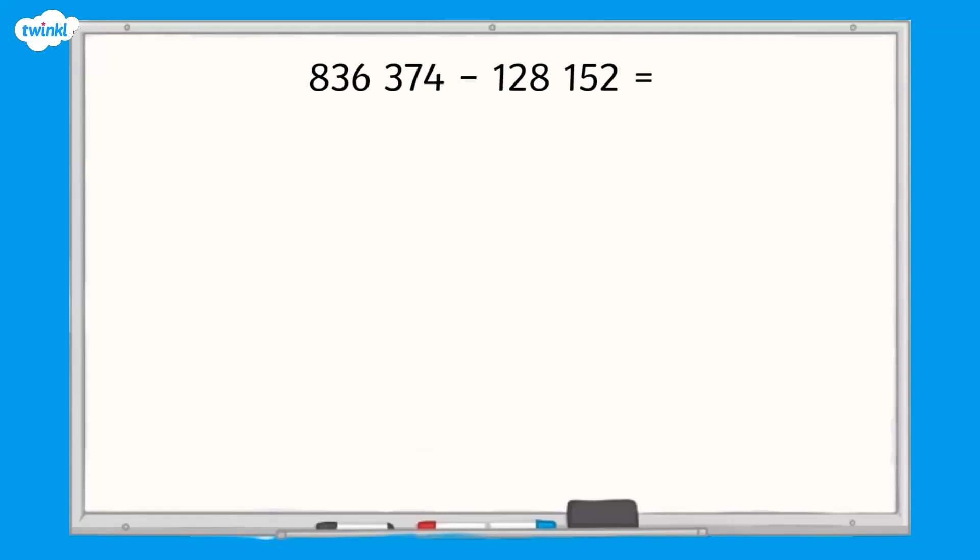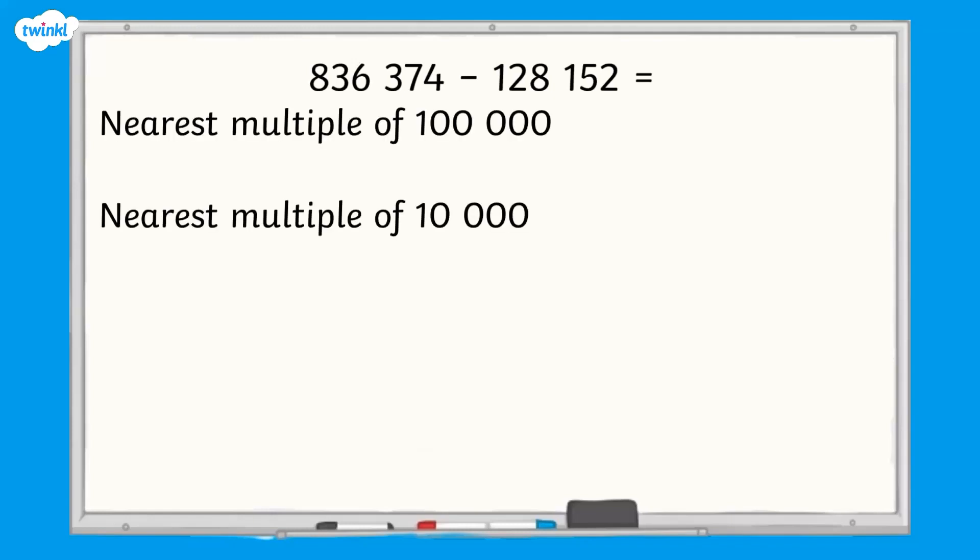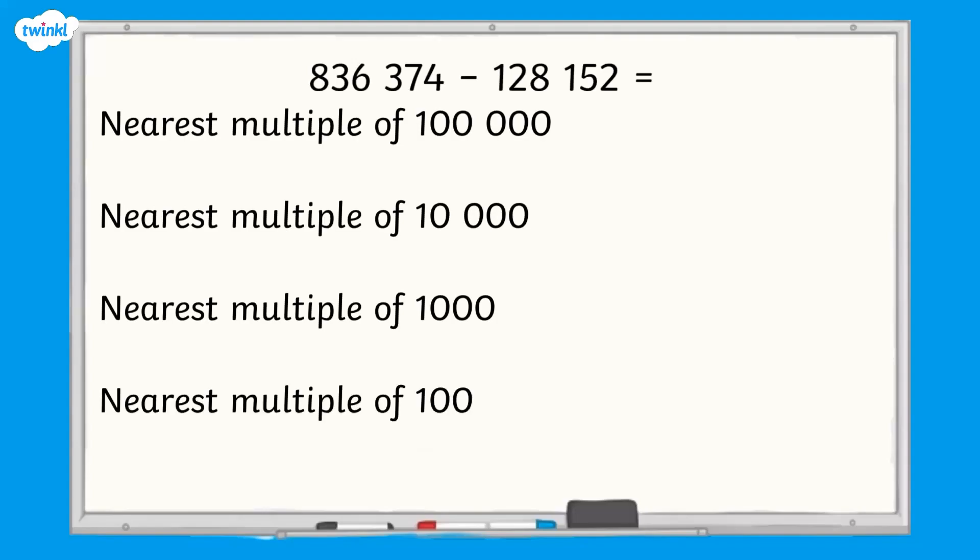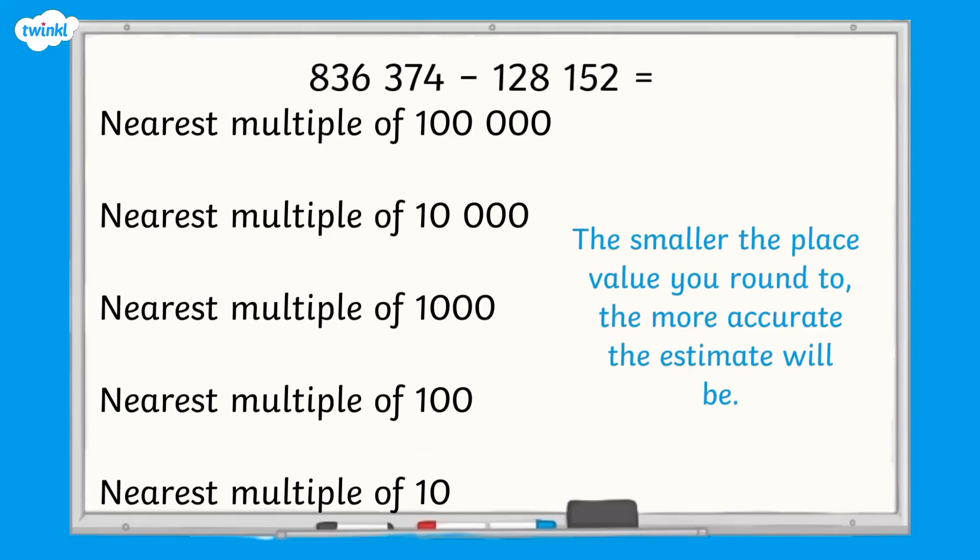We can round these numbers to the nearest multiple of 100,000, 10,000, 1,000, 100, or 10. The smaller the place value we round to, the more accurate our estimate will be, but it can make the mental calculation more difficult and slower.